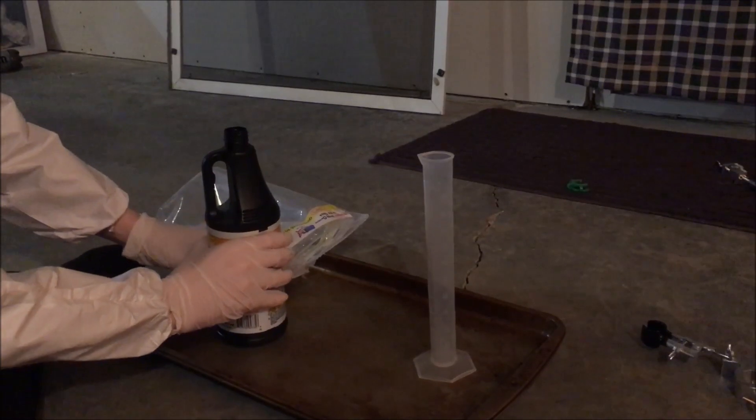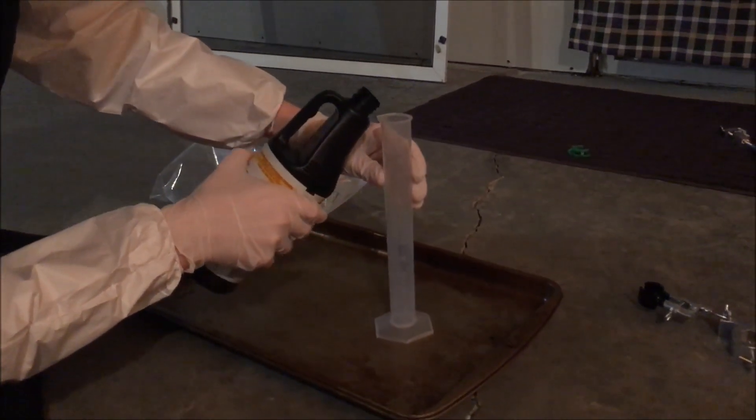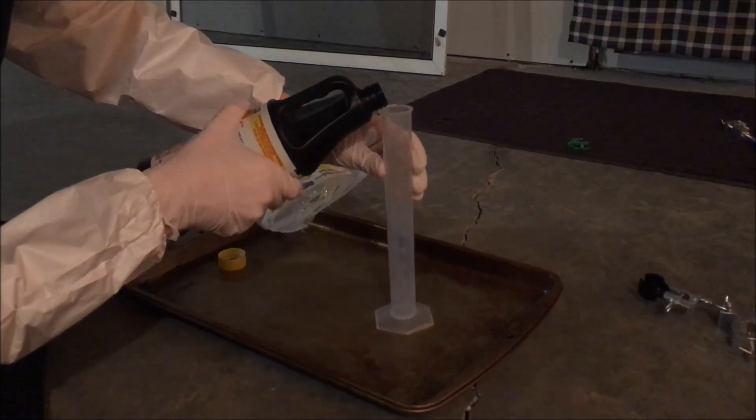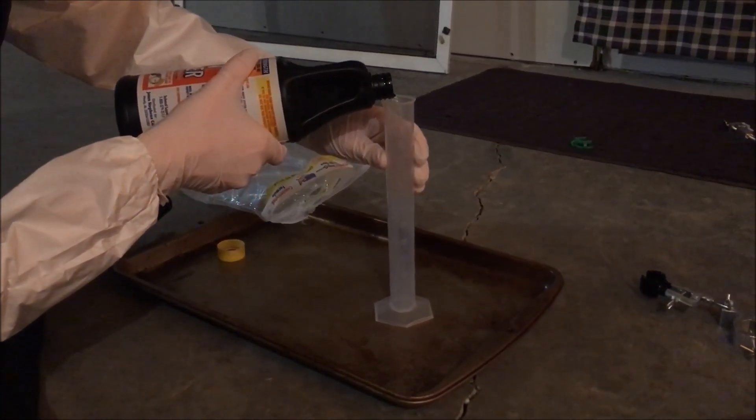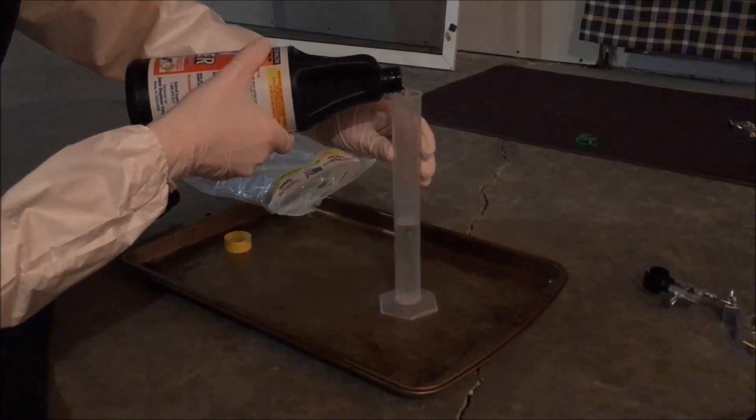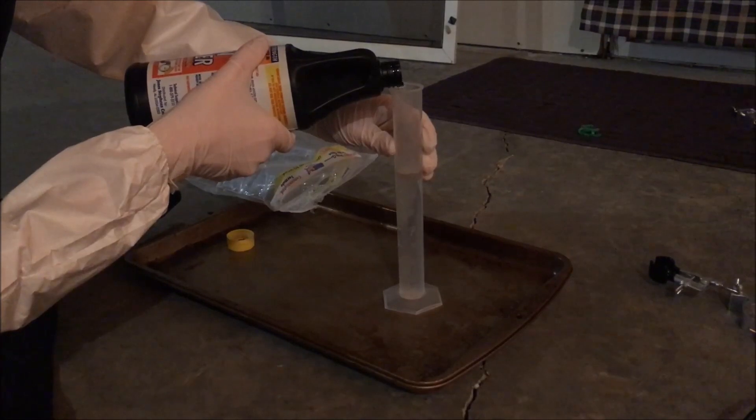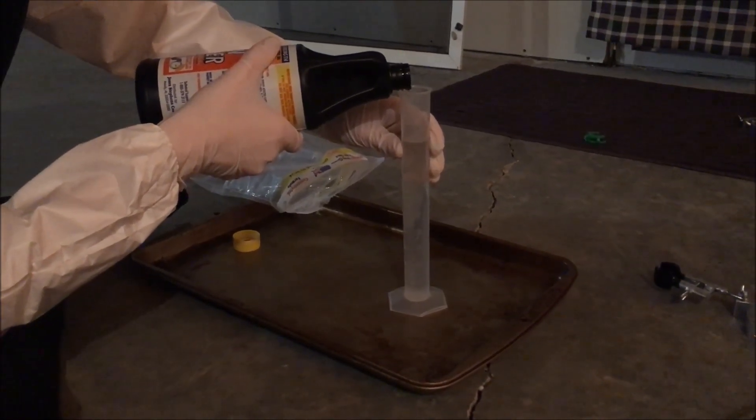The other ingredient for this reaction is sulfuric acid. I measured out 180 milliliters of 94% sulfuric acid found in drain cleaner. You can use better sulfuric acid and potassium nitrate, and you may get a better yield and purity of your final product.